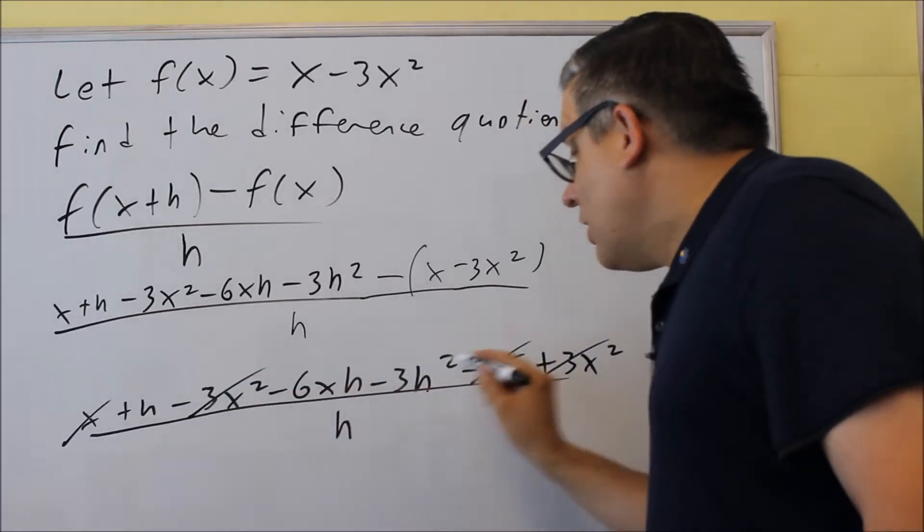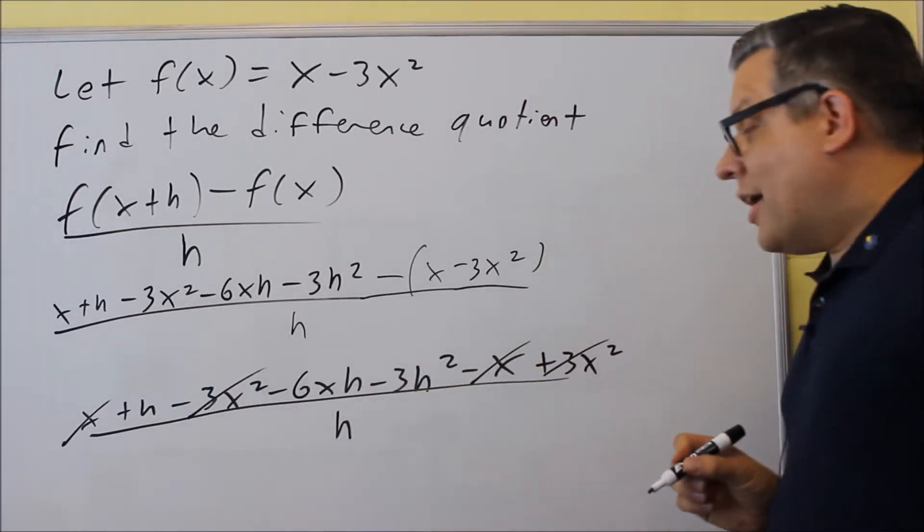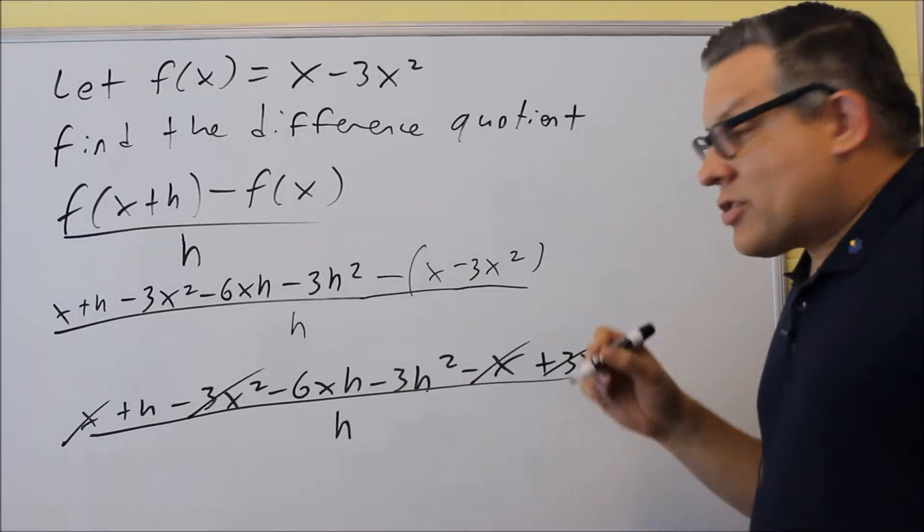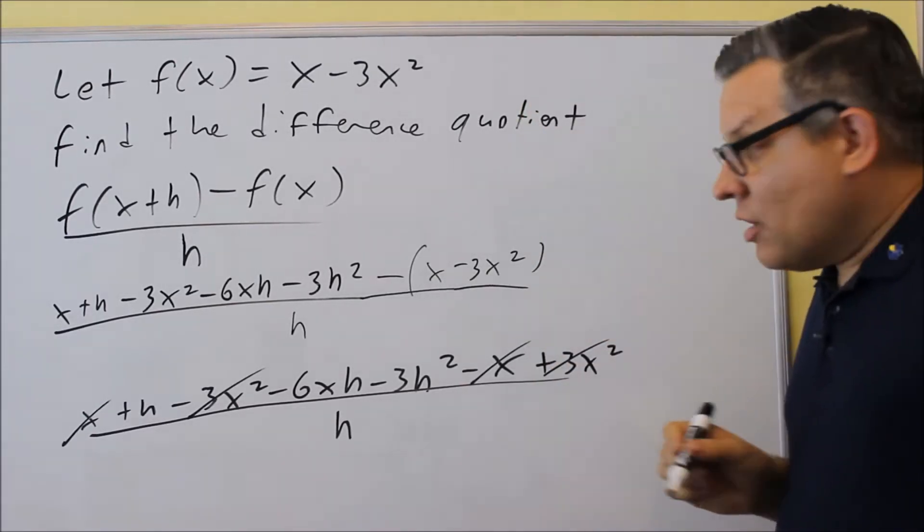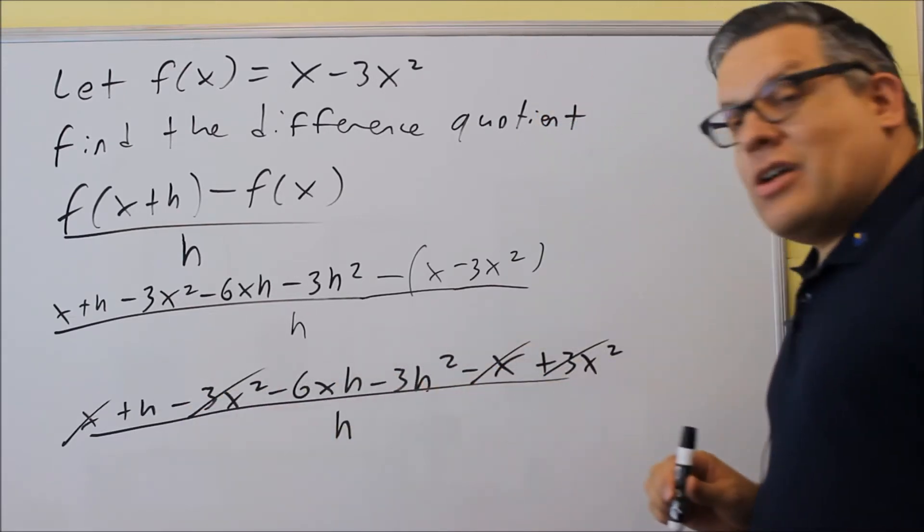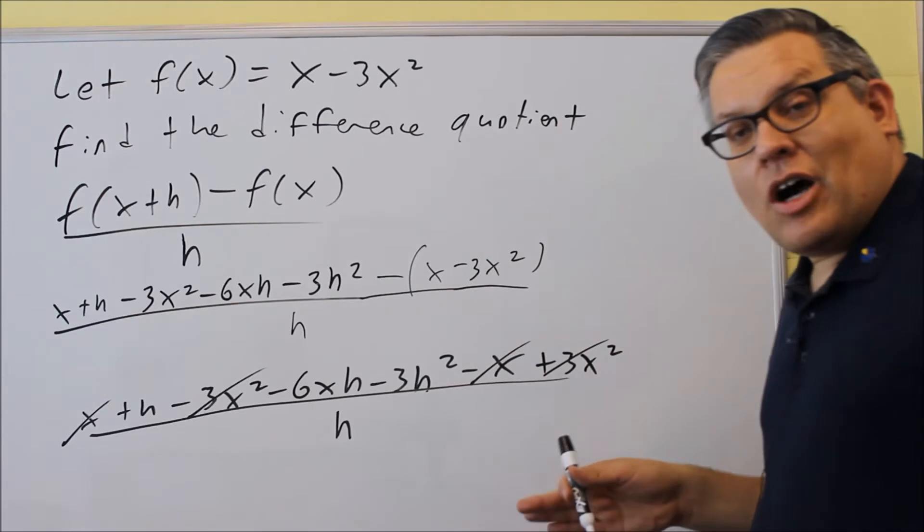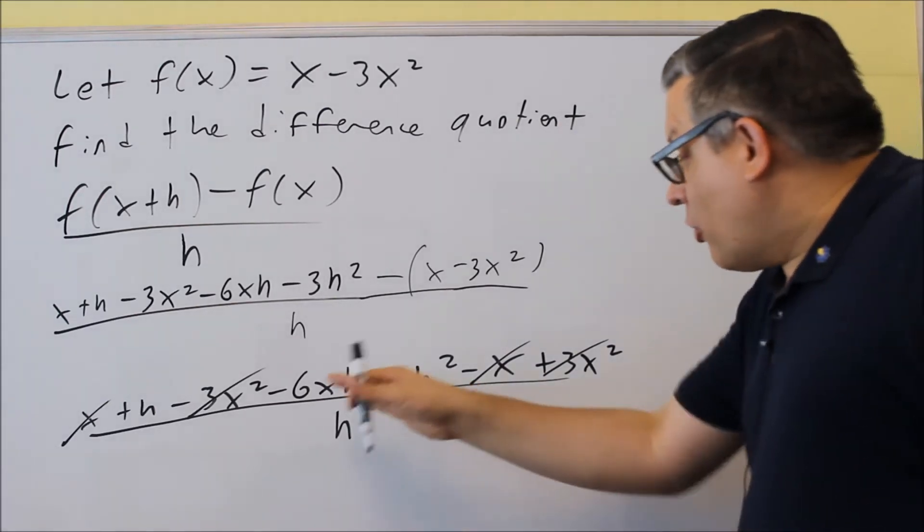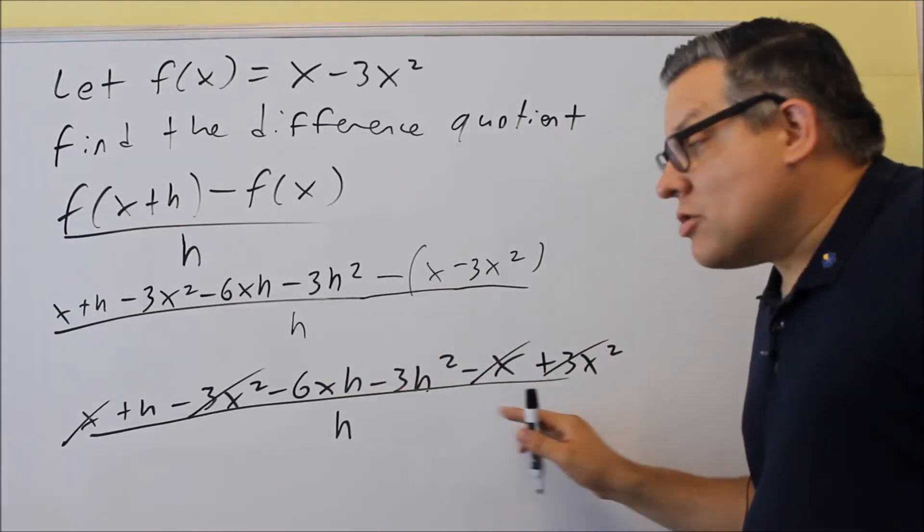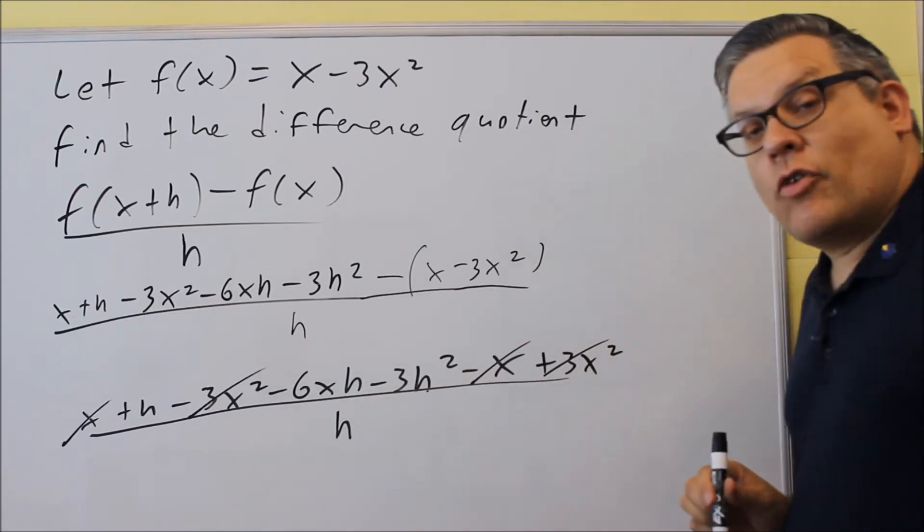And you're left with, everything you're left with has h's in it. And usually that's going to happen for these kind of problems where you have a quadratic in it. You should only have terms with an h in it. If you get a single number or an x by itself, then you might want to go back and check your work here because you should only end up with things with h left over on top.